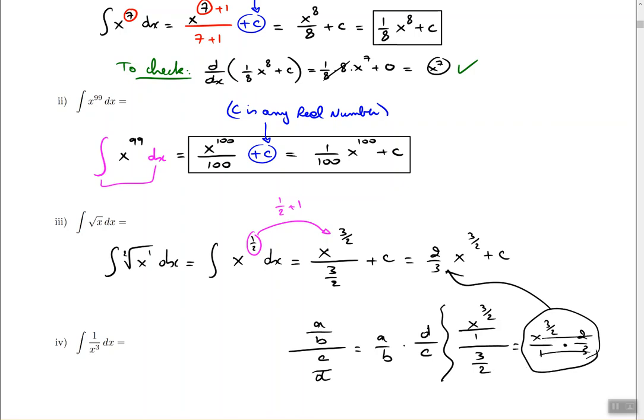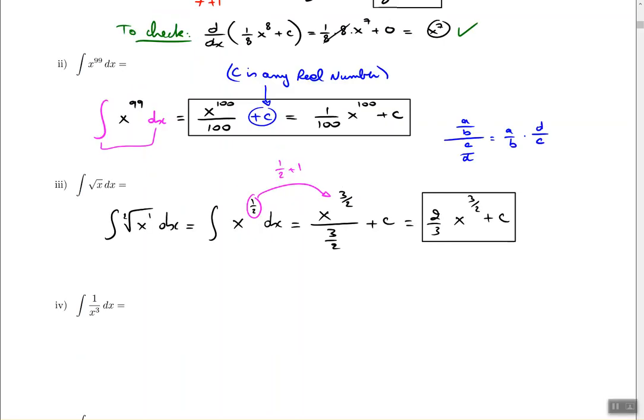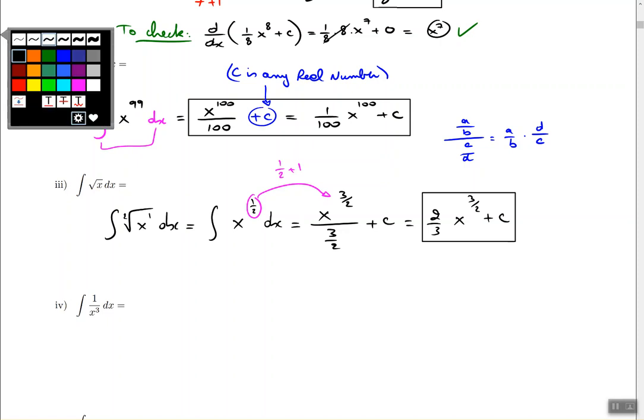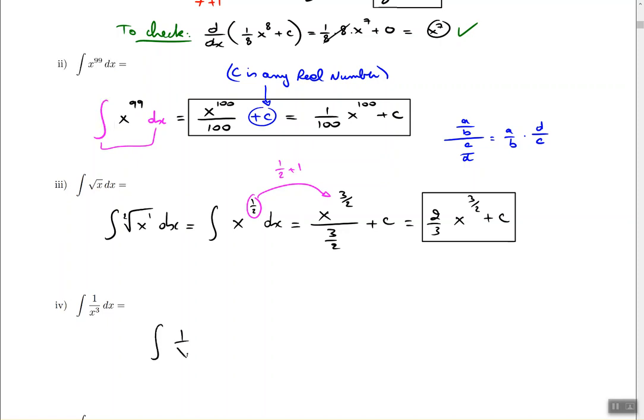The top multiplies with the top, the bottom multiplies with the bottom. And at this point in time we are basically finished. The next one says 1 over x to the power of 3 dx.